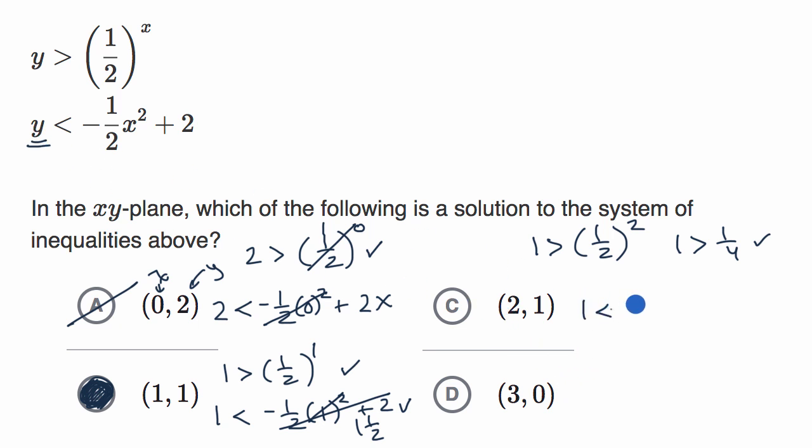The second one is, is it the case that one is less than negative one half times two squared plus two? Two squared is four. Negative one half times four is negative two. Negative two plus two is zero. So this whole thing becomes zero. It is not true that one is less than zero. So this one doesn't meet the second condition.